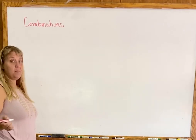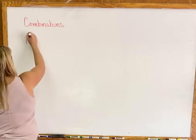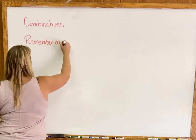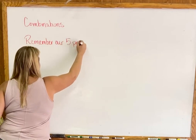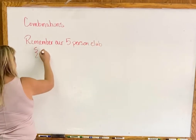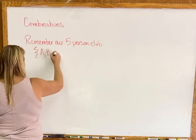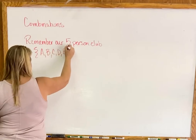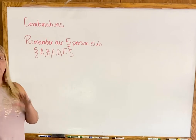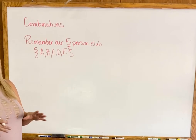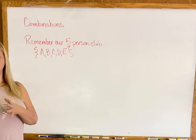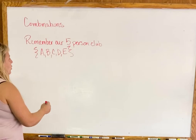Let's go back to our club of five people. Today I'm just going to call them A, B, C, D, and E — we had names before, but now we're just using abbreviations. I want to show you the difference between a permutation and a combination using this familiar example.